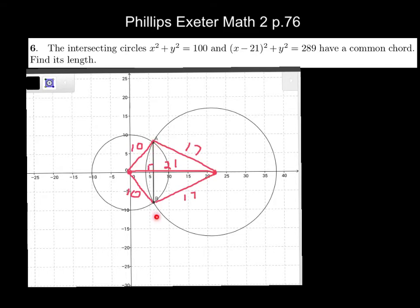Any other ideas for solving this? Joe, you're finding this intersection right here — how did you figure that out? Did you just guess and check? No — I knew that was 10, and that was 17, and the total is 21. I knew the length, so I subtracted to get 7. So you think this length right here is 7? I'll put a question mark by that — I slightly disagree that it's 7.